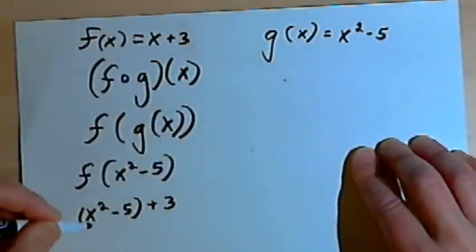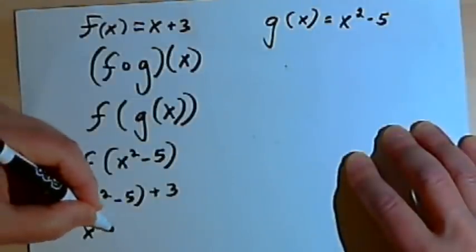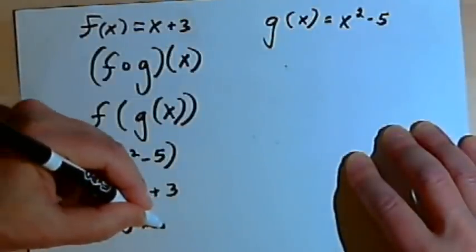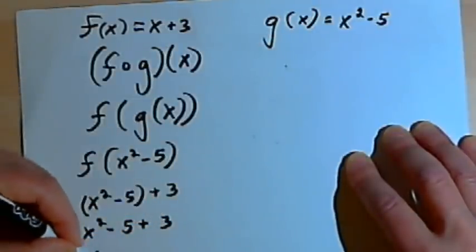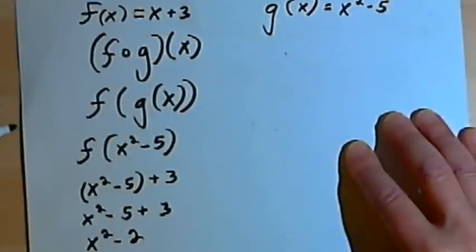Then I'll just evaluate what this is. I don't need the parentheses, so I can turn this into x squared minus 5 plus 3, and that just becomes x squared minus 2.